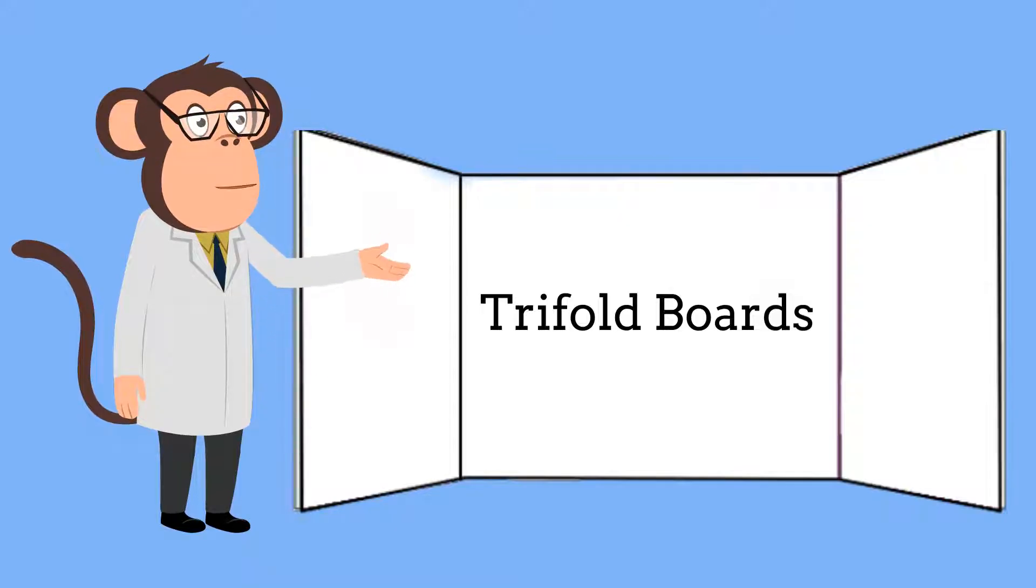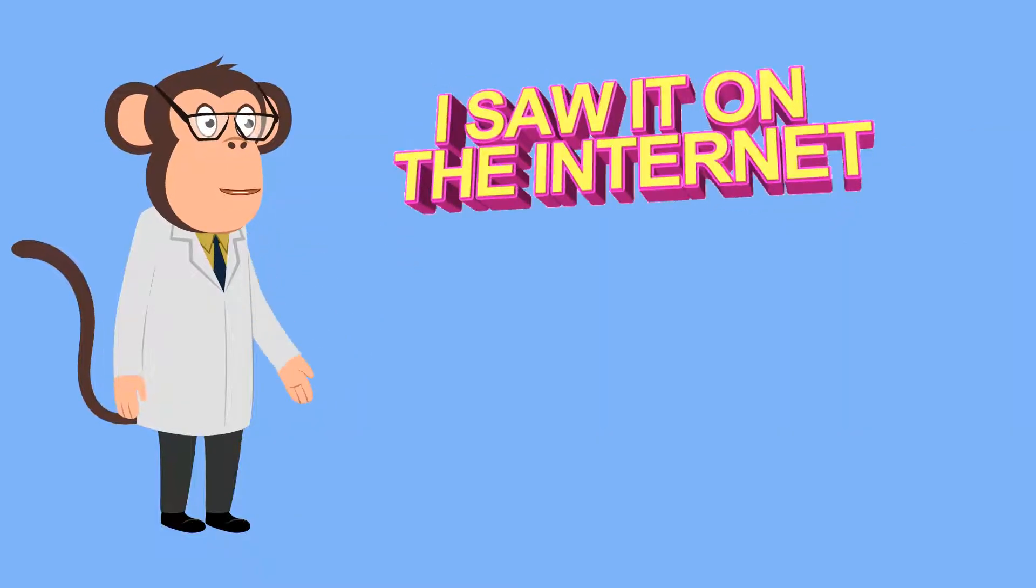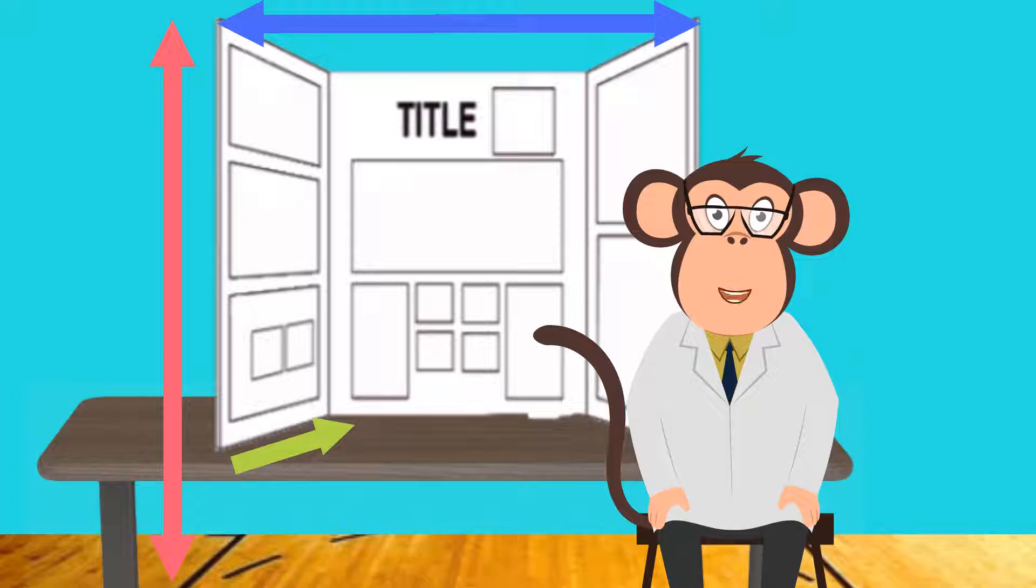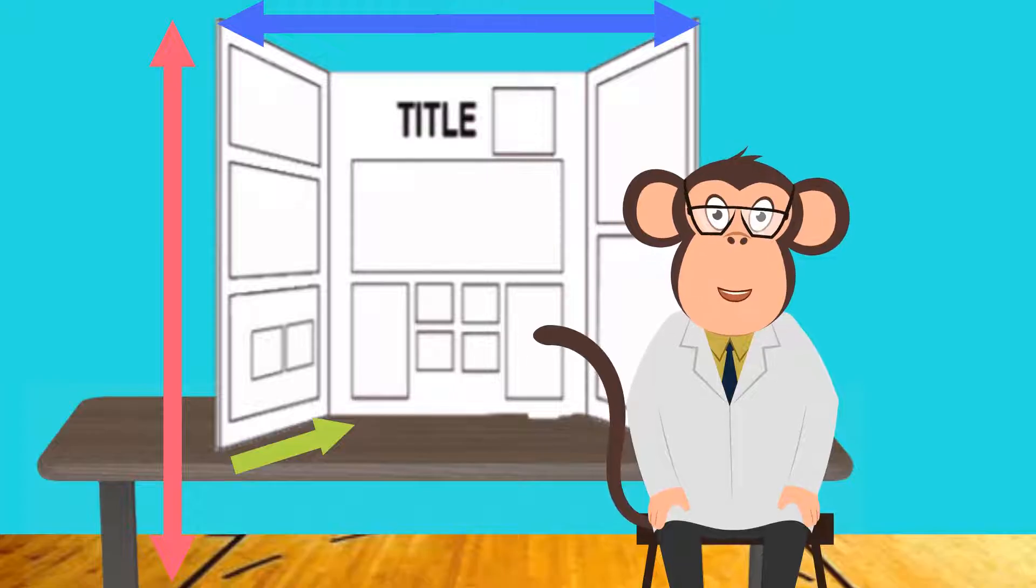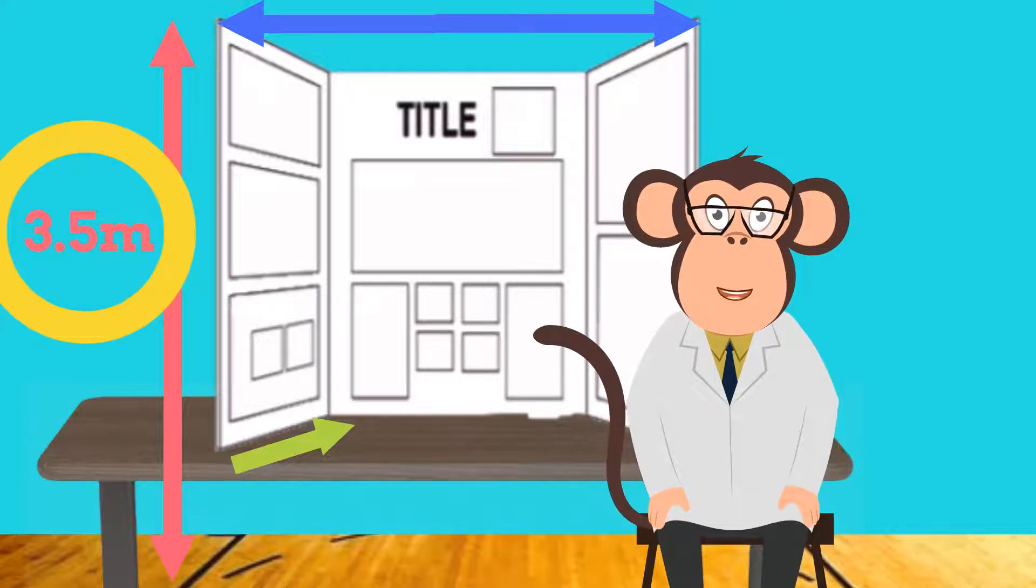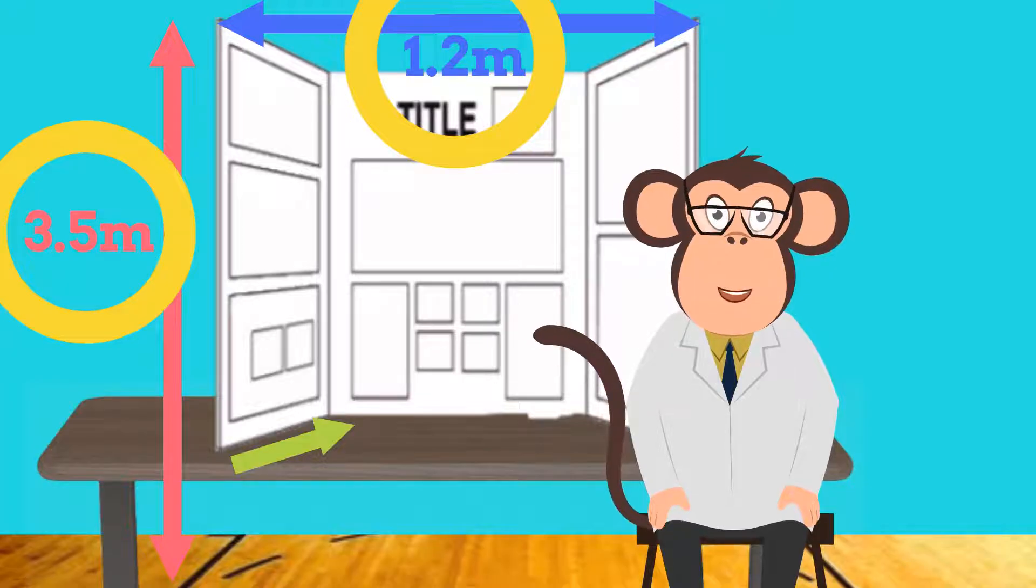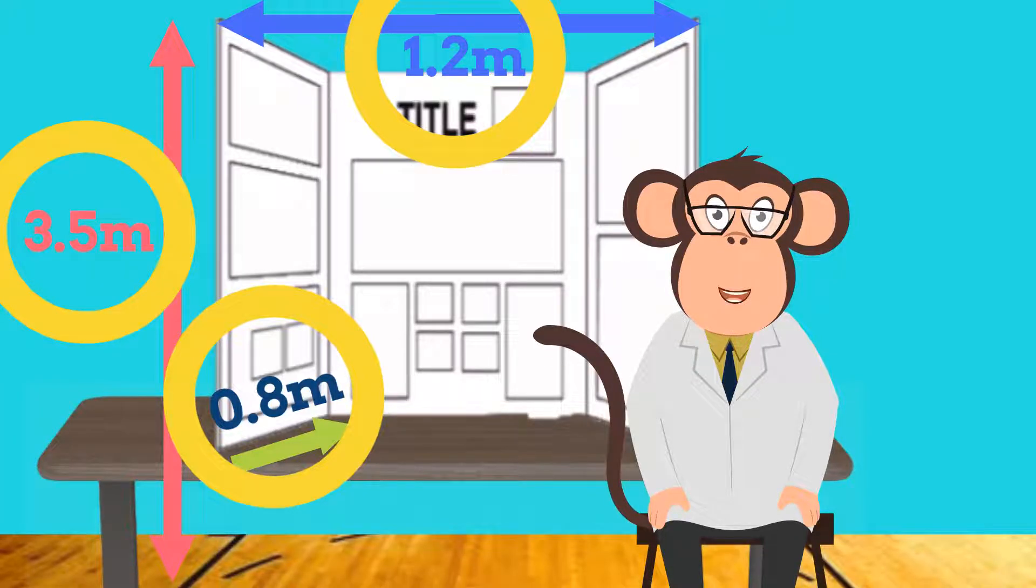To put your work together, you will obviously need a display board. After all, that's what this video is about, your science project display board. Tri-fold display boards can be purchased off the internet or at office supply and discount stores. Choose a board size that will allow you to display all of your sections without crowding the board. However, don't go too big. Most science fairs suggest that you use a display board that is not taller than 3.5 meters when on a table, not wider than 1.2 meters because you may be sharing the table space, and not deeper than 0.8 meters because you don't want a judge to have to stick their head into your display in order to read it. Double check these requirements with your science fair.